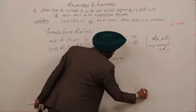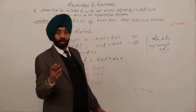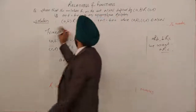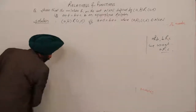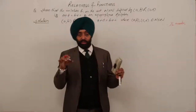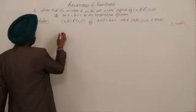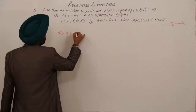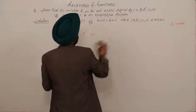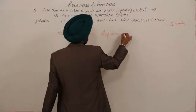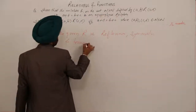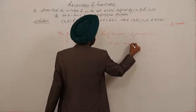Again dear students, you will be awarded one mark here. The final statement is: the given relation is reflexive, symmetric, and transitive. Therefore it is an equivalence relation. And half marks for this final statement.